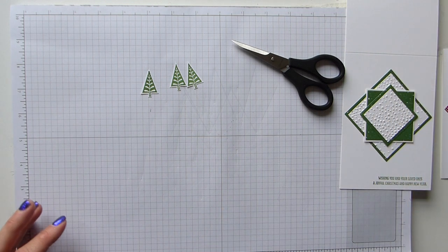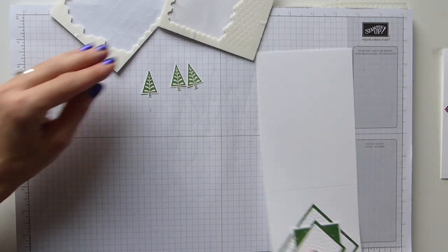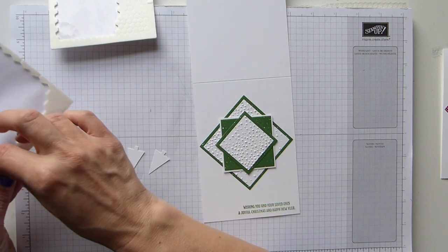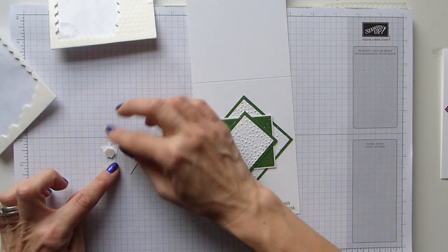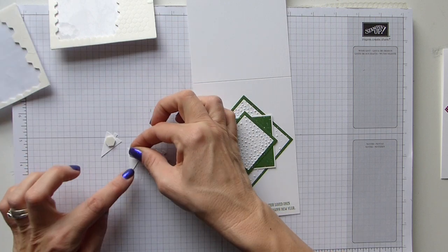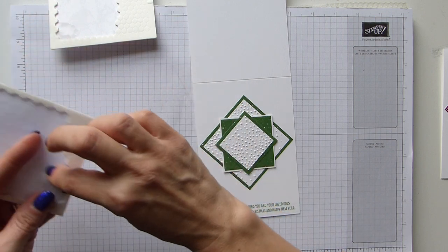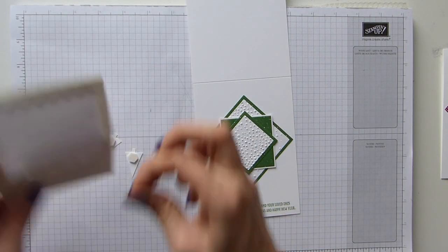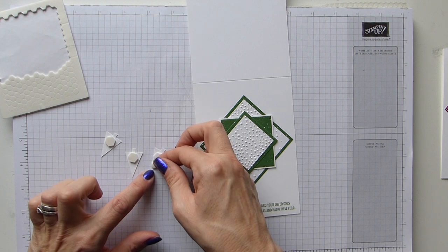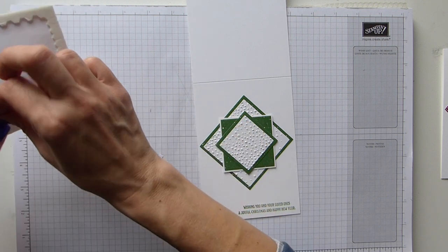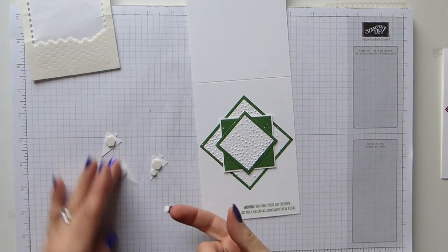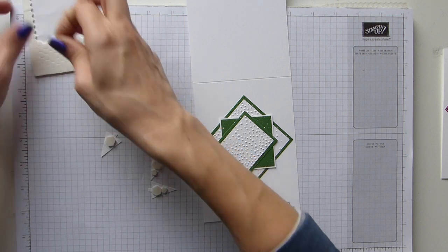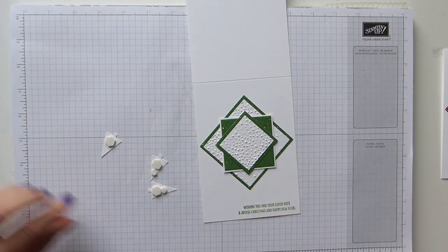Right, so dimensionals, trees, card. So flip them over, and I simply stuck a large dimensional at the bottom and then a small one at the top. And the reason I added the small one was for when I start and add the metallic enamel shapes, because you actually press them down to get them to stick, and it was bending the tree.